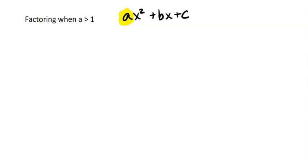And on the ones we had done previously, a was always 1. It was just 1x squared plus or minus something. So now our expressions are going to look like 2x squared plus 7x plus 3.